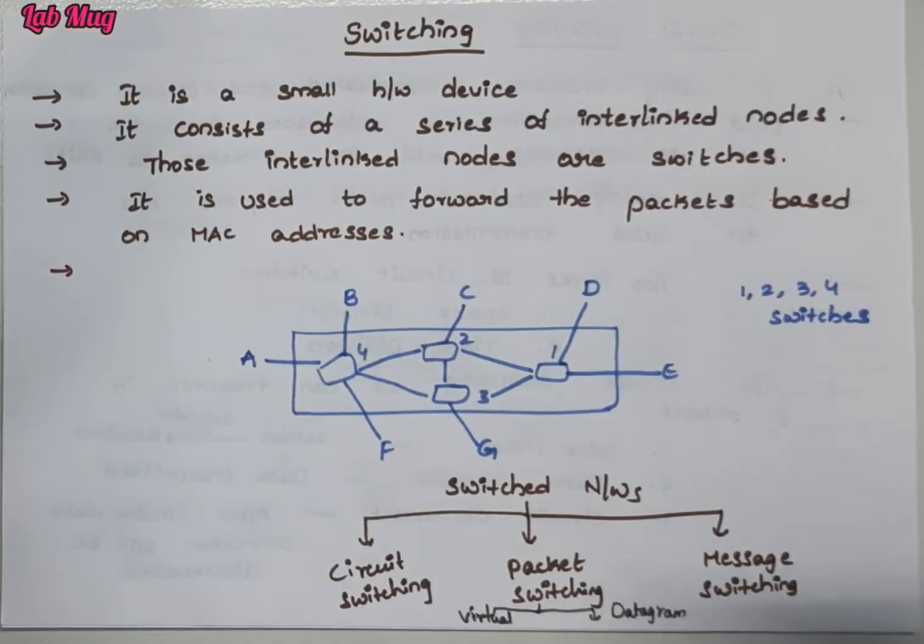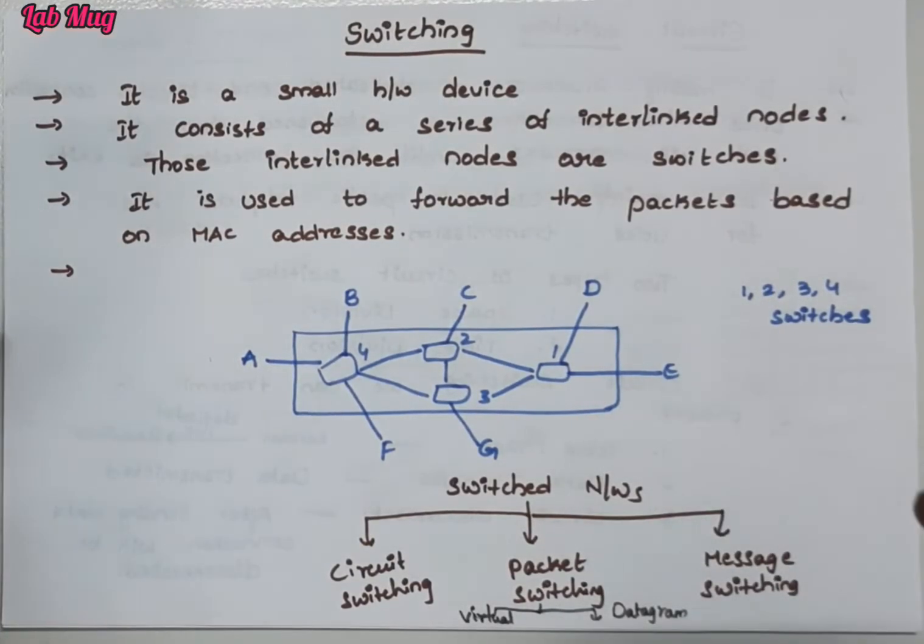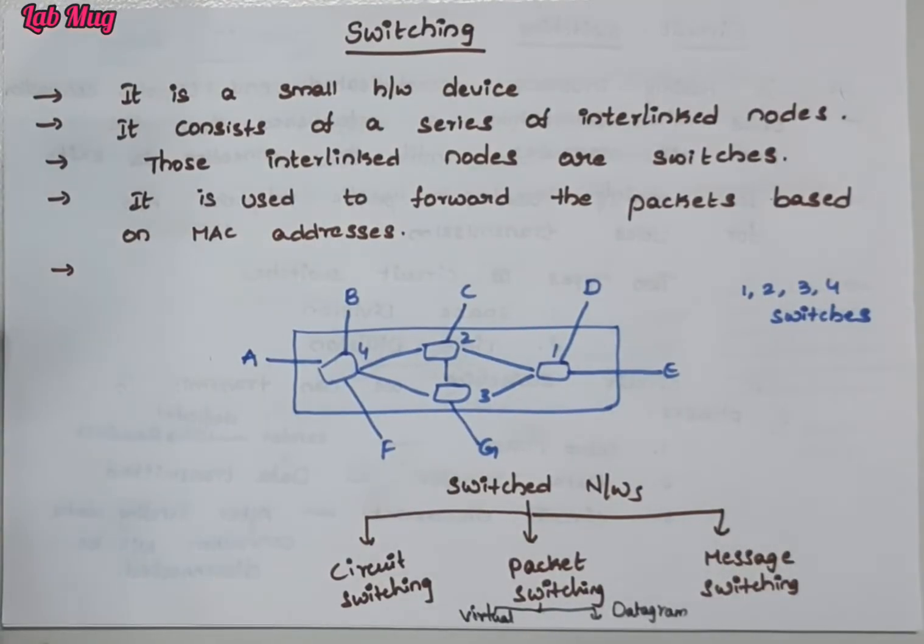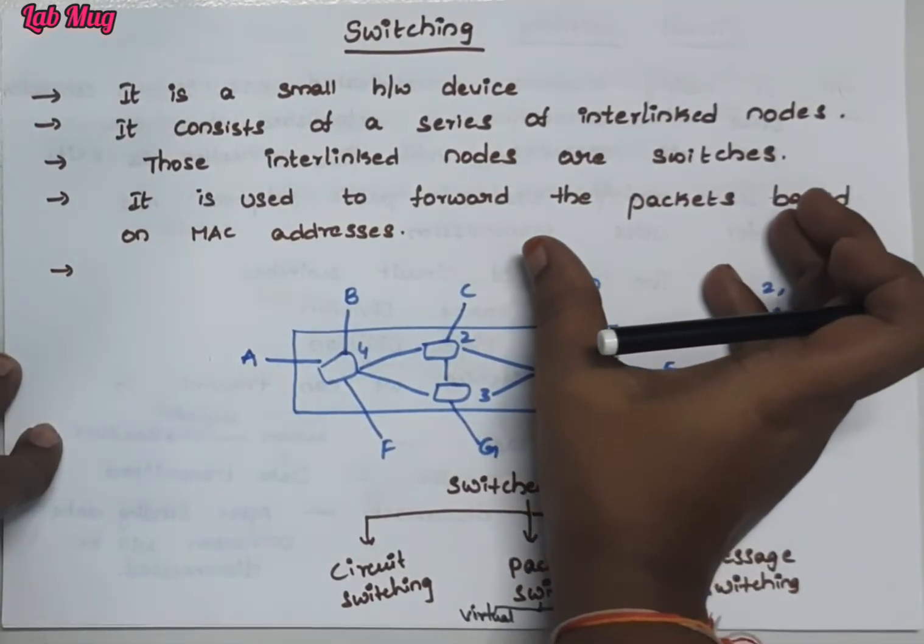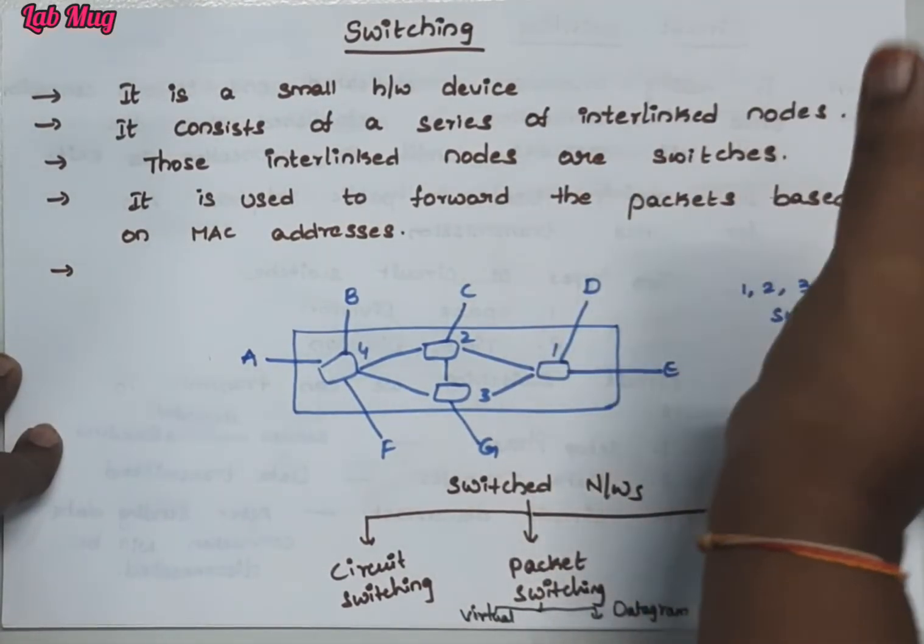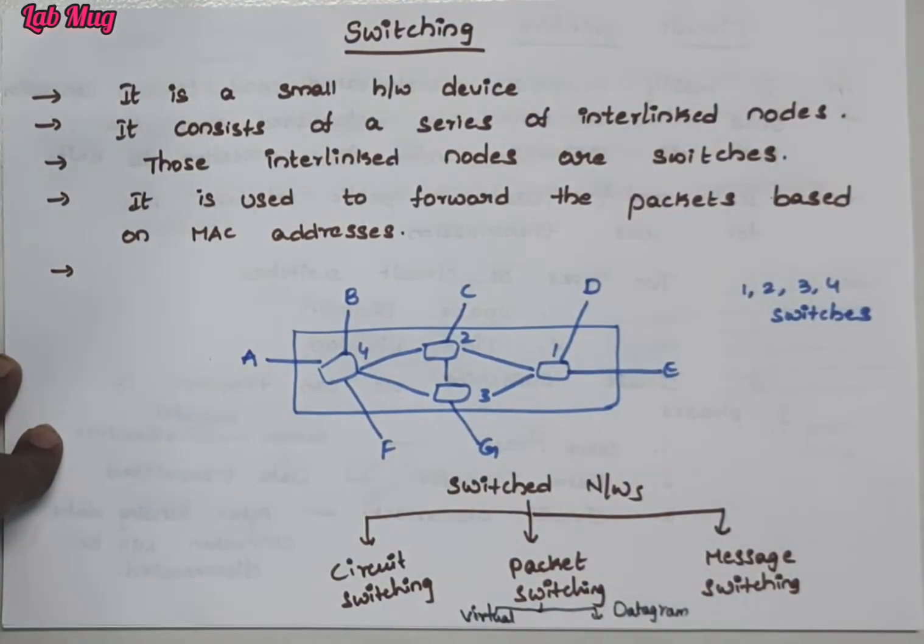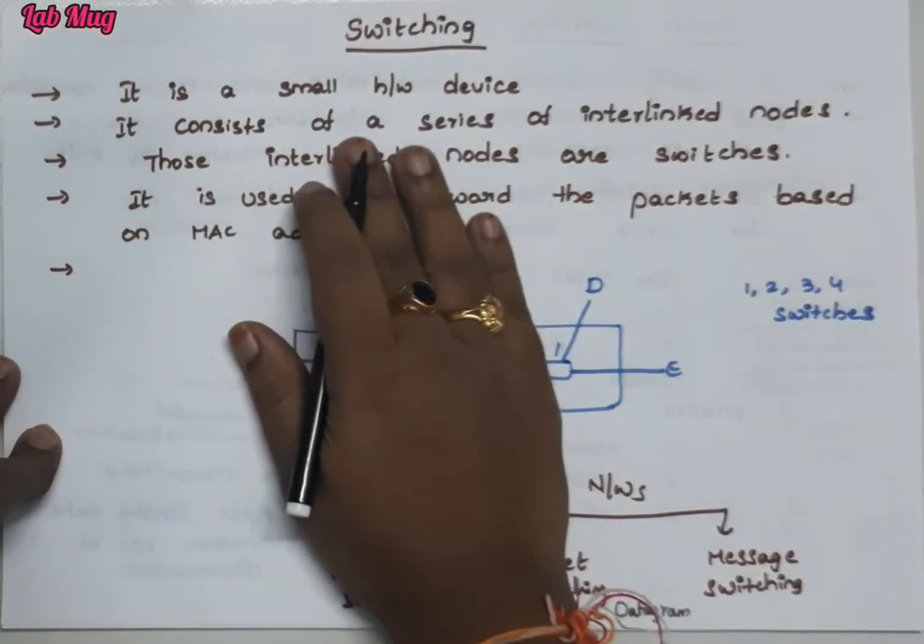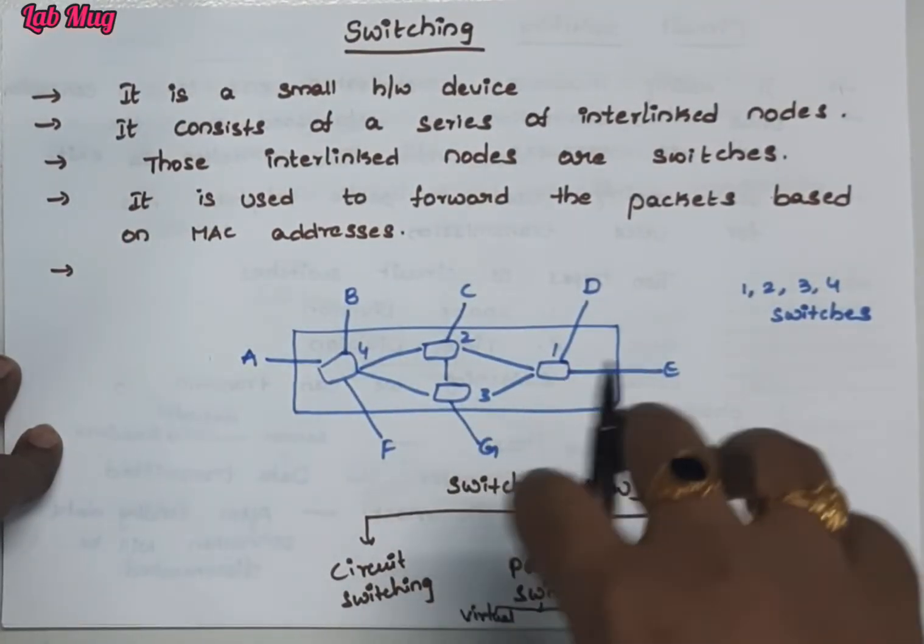What is switching? It is a hardware device. We have different hardware devices. In multiplexing, one of the hardware devices is this small hardware device called switching. This switching allows us to establish connections between different interlinked nodes. It consists of a series of interlinked nodes.